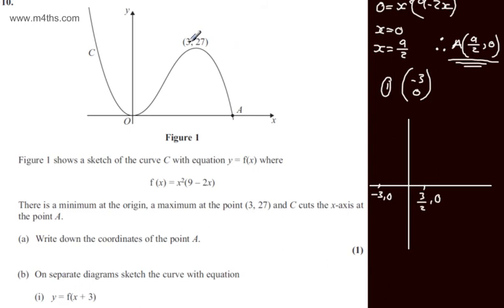If we now consider the maximum, we've moved this to the left 3, or if you like, subtracted 3 from the x coordinate. So we're going to have the point here, 0 comma 27.